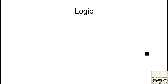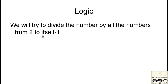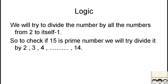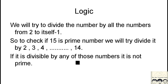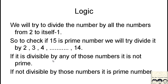Now let's look at the logic we will be implementing in our code. What we will do is try to divide the given number starting from 2 and go up till itself minus 1. For example, to check whether 15 is prime, we start from 2 and go up till 14. If any number divides 15, then it is not prime. 15 is not divisible by 2, so we move on. But 15 is divisible by 3, so it is not a prime number.